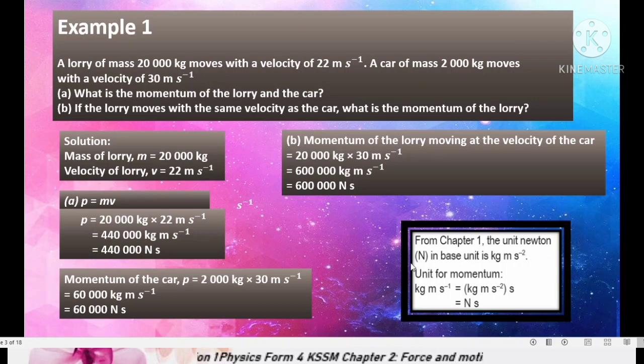The unit newton N is base unit. In base unit, it's kg meter second negative 2. Unit for momentum equals to kg meter second negative 1. So it equals to kg meter second negative 1 times second to the power 1. So this one equals to newton second. So it means another unit that can be used for momentum is newton second.